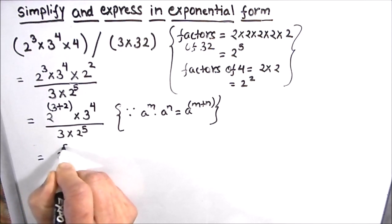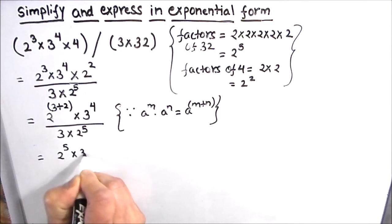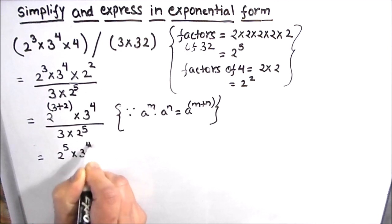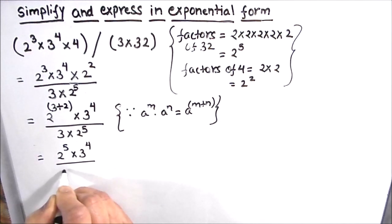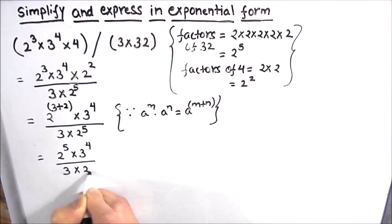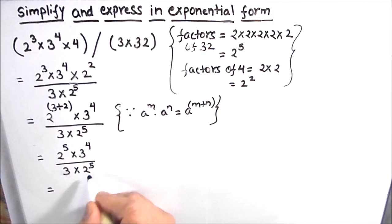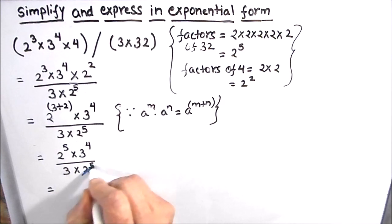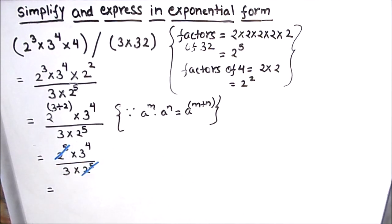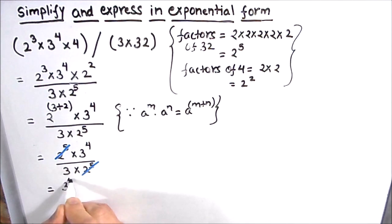We now have 2 raised to power 5 times 3 raised to power 4, divided by 3 times 2 raised to power 5. We see that 2 raised to power 5 is in both the numerator and the denominator, so these two cancel out, leaving 3 raised to power 4 in the numerator divided by 3.